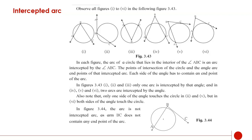Now, intercepted arc. Observe all the figures given in figure 3.43 — there are 6 figures. In each figure, the arc of a circle that lies in the interior of angle ABC is an arc intercepted by that angle ABC. The points of intersection of the circle and the angle are endpoints of that intercepted arc. Each side of the angle has to contain an endpoint of the arc.